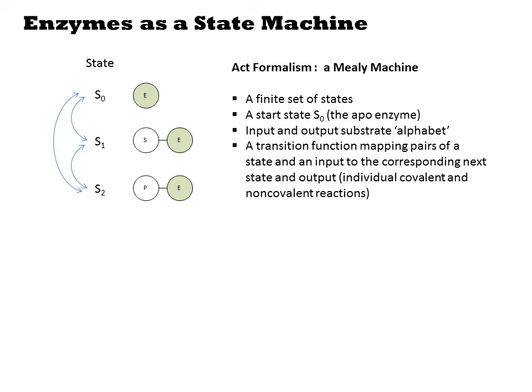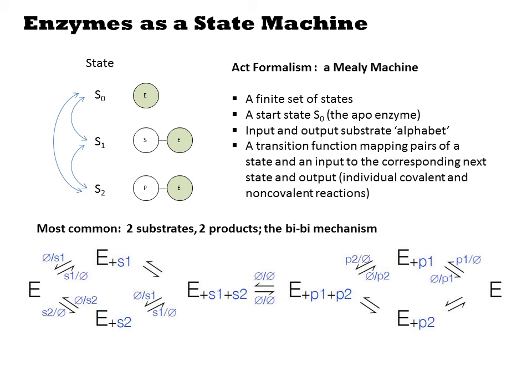Formally, the data structure this implies is a Mealy machine, which defines this set of states, an initial state defined to be the APO or free enzyme, an input and output substrate alphabet, and a transition function. This formalism captures the essence of biochemical diagrams, such as this one.